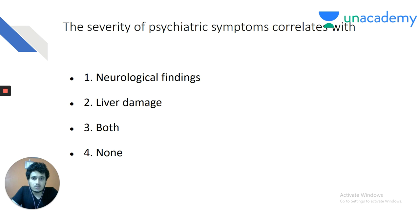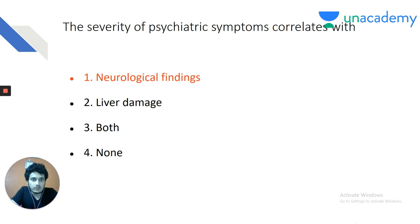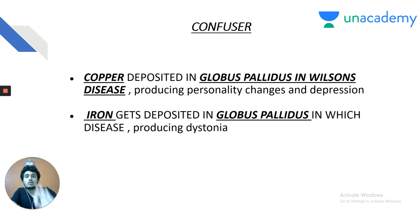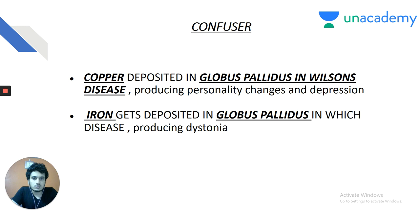The severity of psychiatric symptoms in Wilson's disease correlates with neurological findings, not with liver damage — liver damage is independent of psychiatric symptoms. Copper deposited in the putamen and globus pallidus produces personality changes and depression. This contrasts with Hallervorden-Spatz disease, where iron deposits in the globus pallidus producing dystonia and the eye-of-tiger sign on MRI.